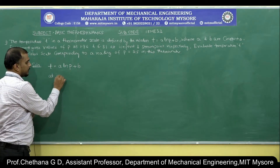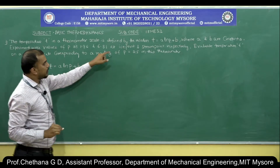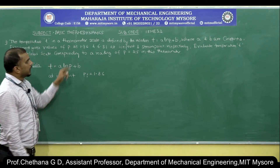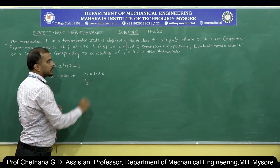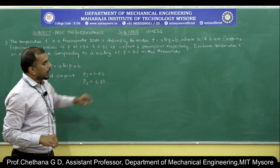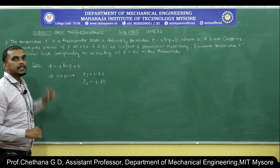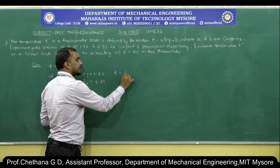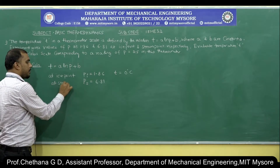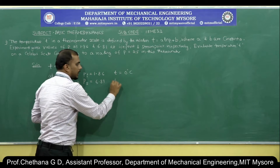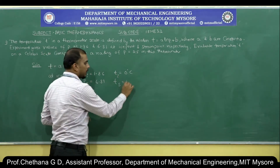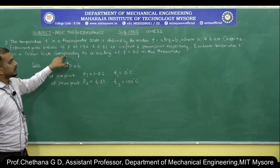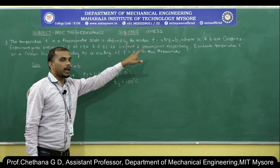At ice point, the value of p is 1.86, and at steam point it is 6.81. Evaluate the temperature T on a Celsius scale. Since this is a Celsius scale, at ice point temperature T is 0°C and at steam point temperature is 100°C. What is asked: corresponding to a reading of p = 2.5, evaluate the temperature T.